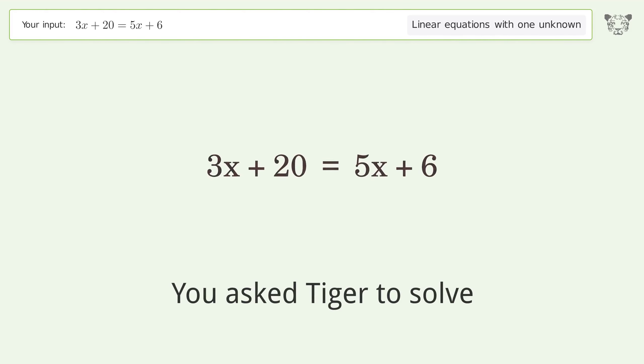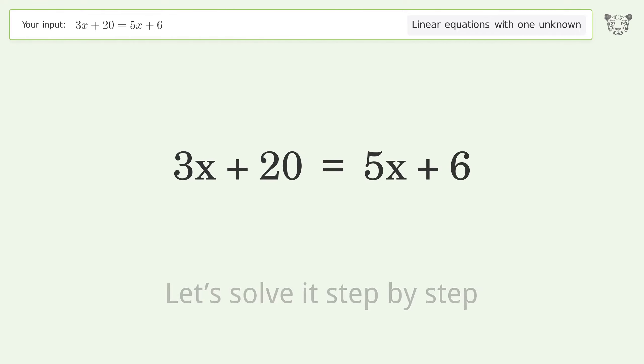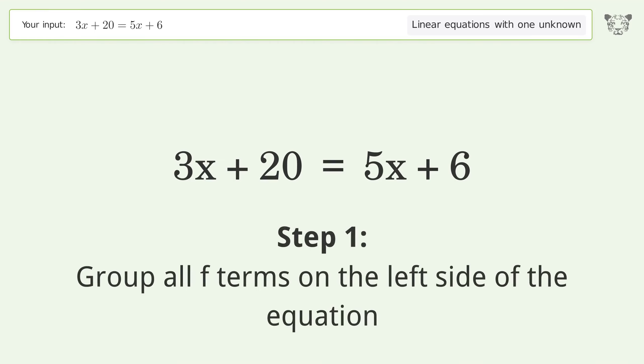You ask tiger to solve this. It deals with linear equations with one unknown. The final result is x equals 7. Let's solve it step by step. Group all x terms on the left side of the equation.